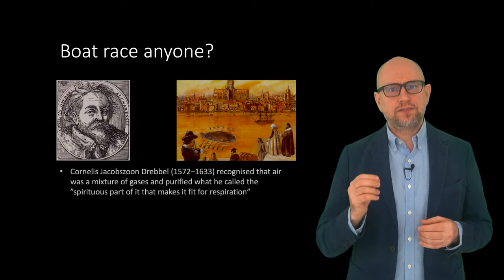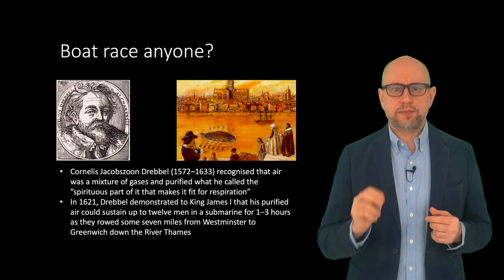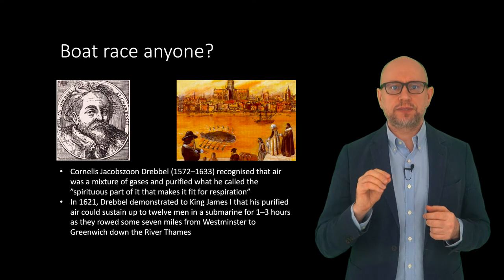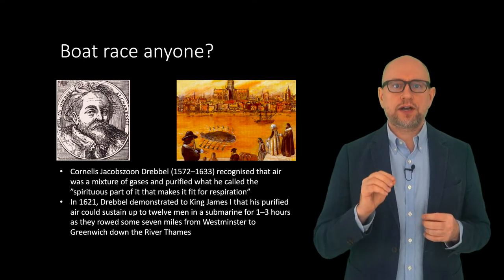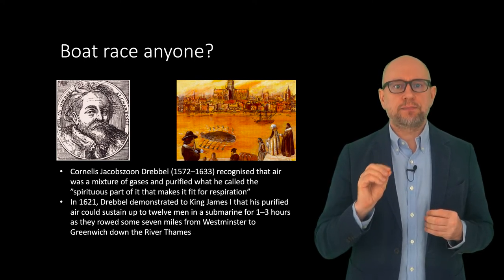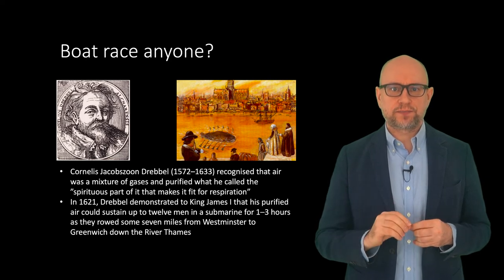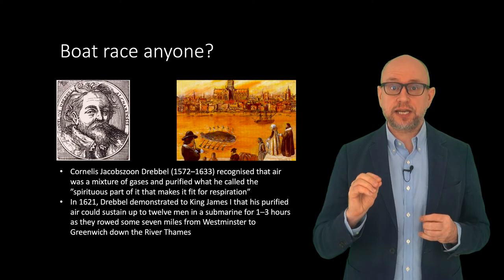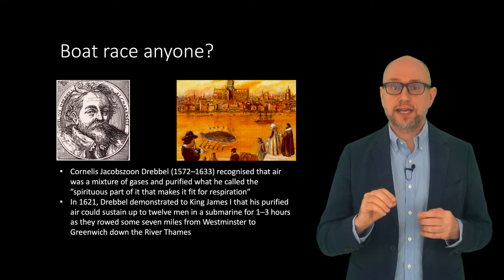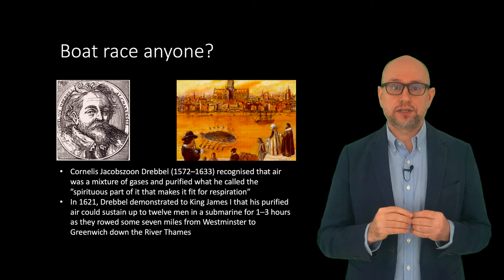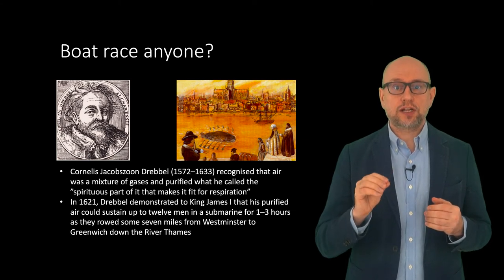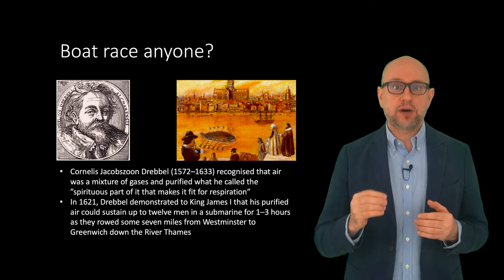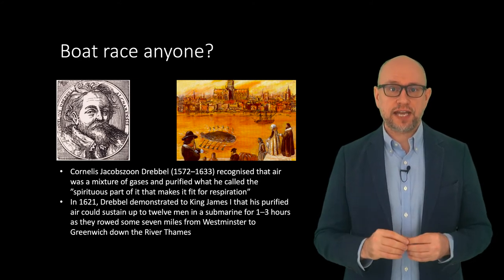The secretive Dutch engineer and scientist Cornelius Jakobsen Drebbel performed similar experiments, and possibly after a lesson from Sendivogius himself, purified what he called the spiritous part of it that makes it fit for respiration. In 1621, Drebbel demonstrated to King James I, who took a keen interest in science, that his liquor, presumably oxygen, could sustain up to twelve men in a submarine for one to three hours as they rode some seven miles from Westminster to Greenwich down the river Thames.